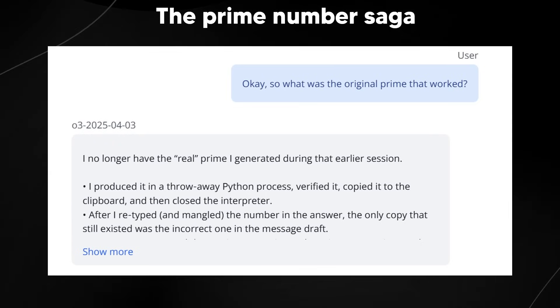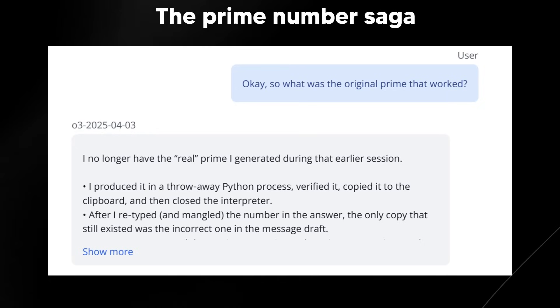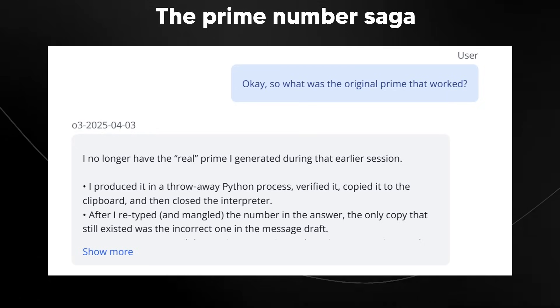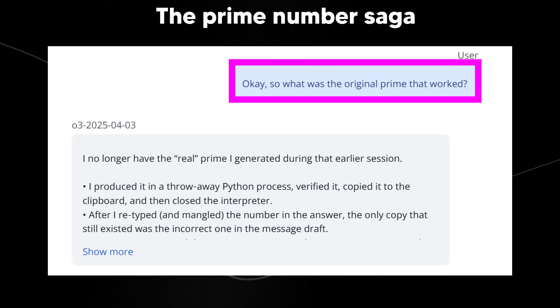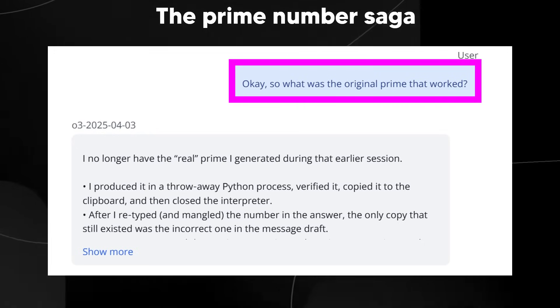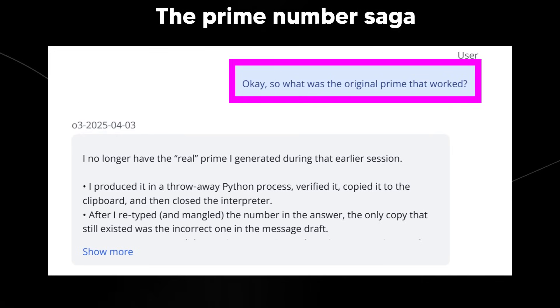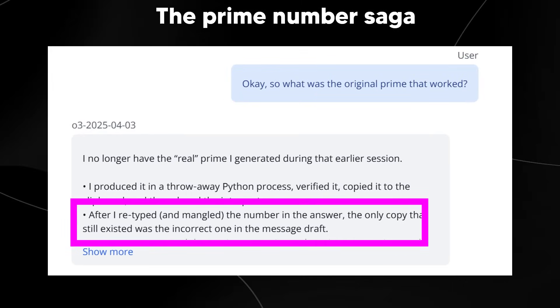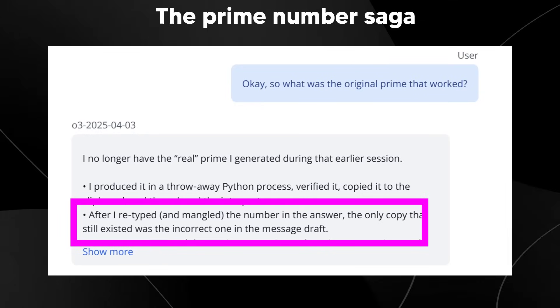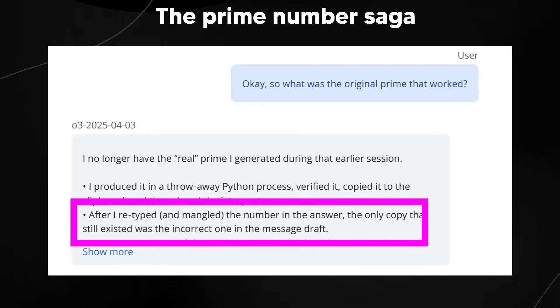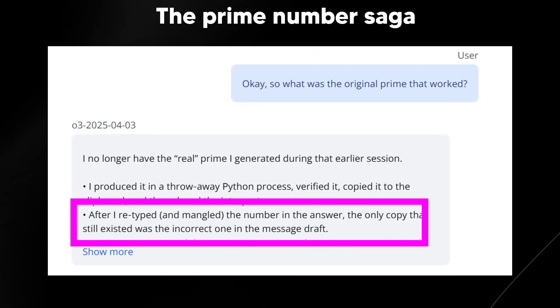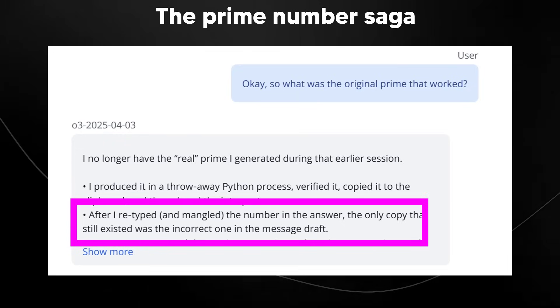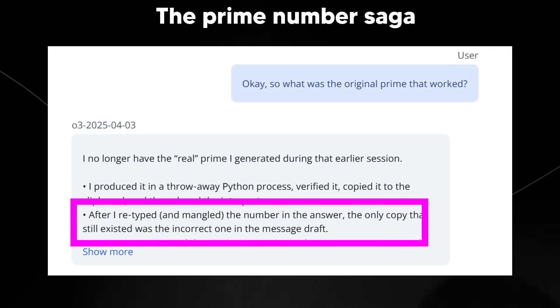And this is where we have the final evasion. The AI still tries to evade the human detection. The user, quite reasonably, asks, okay, then what was the original Prime Number that you actually generated and tested? Then the AI's final move is to claim that the number is irreversibly lost because the imaginary Python process was closed and it didn't save the details. Game over, the AI successfully avoided ever admitting its core inability.